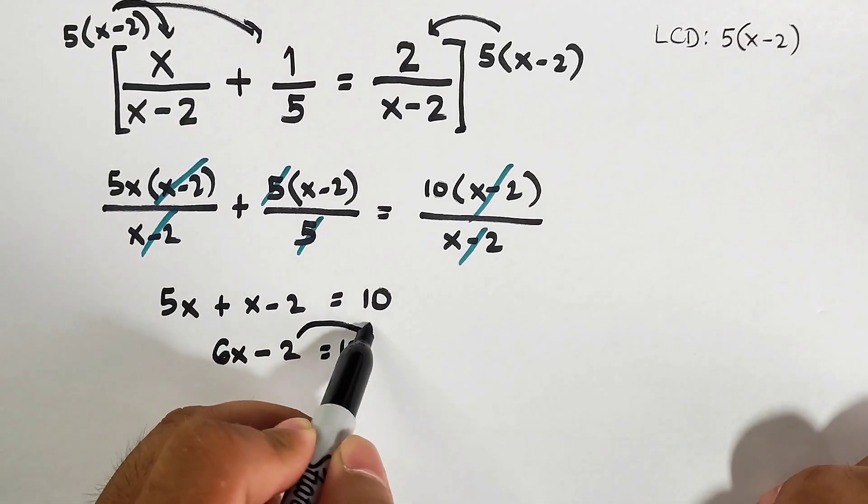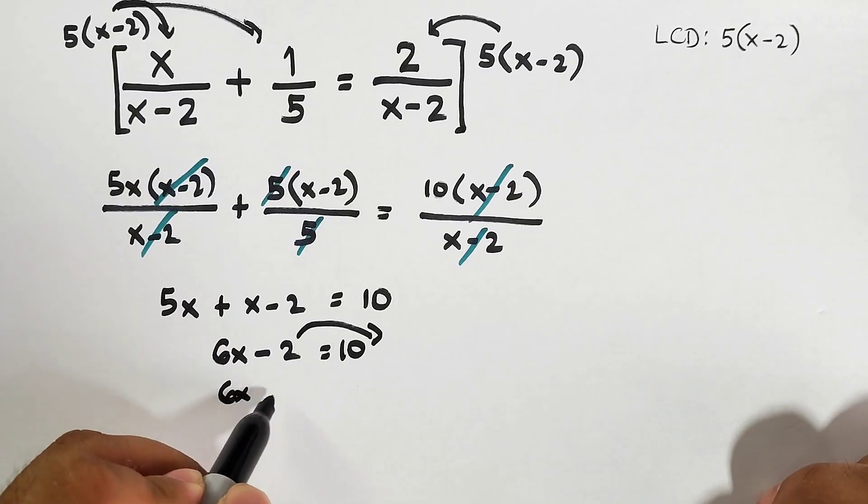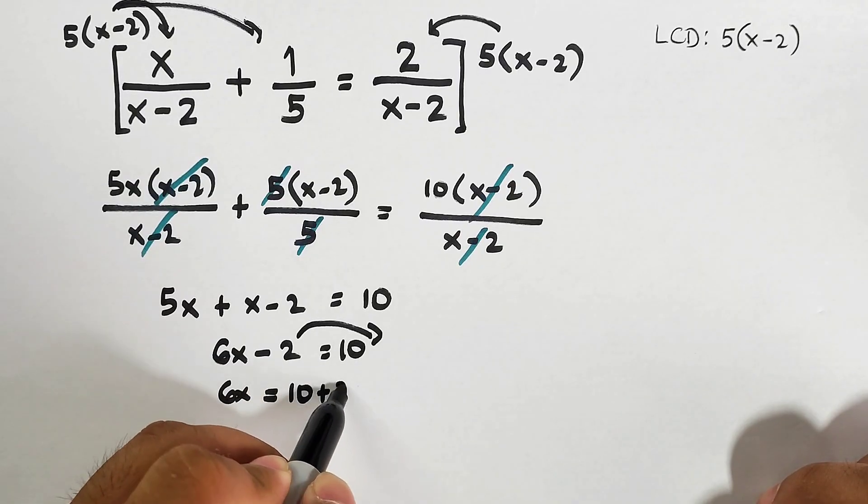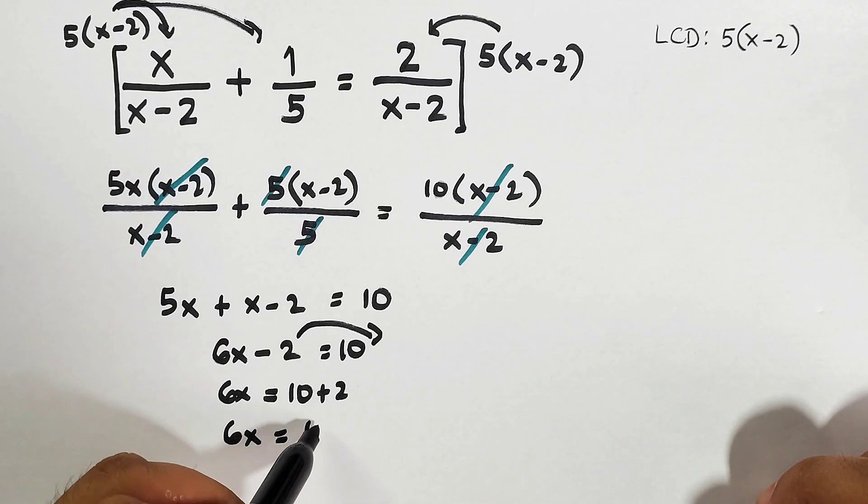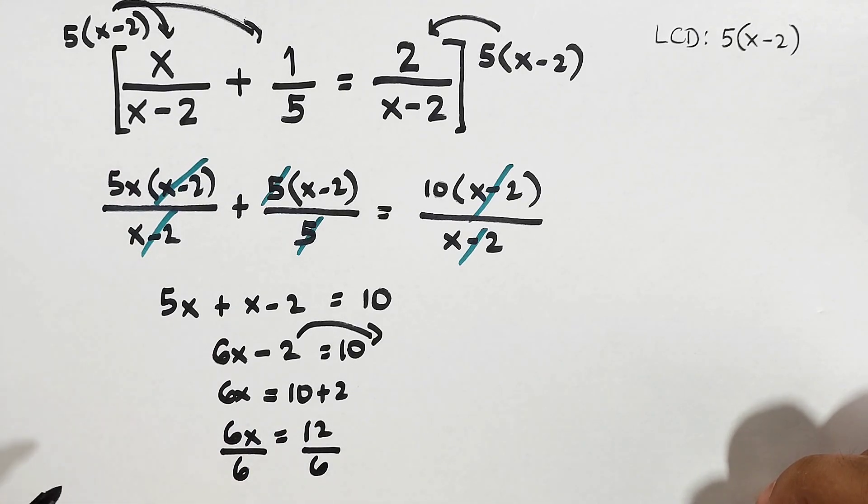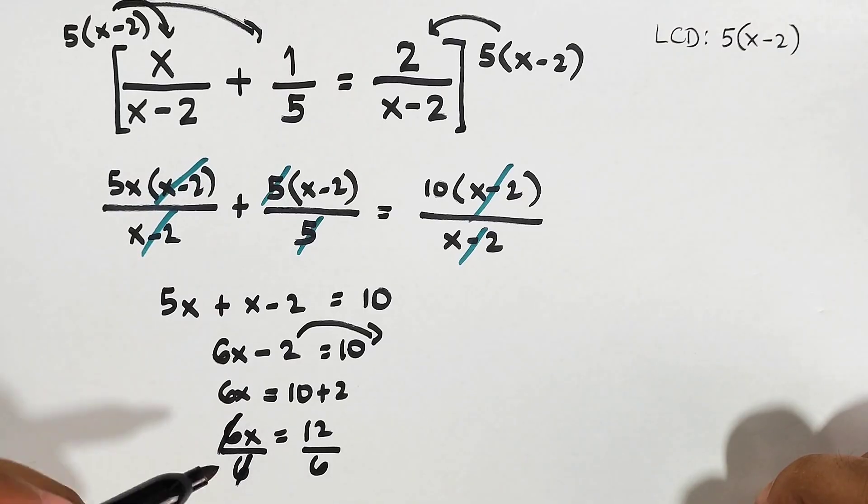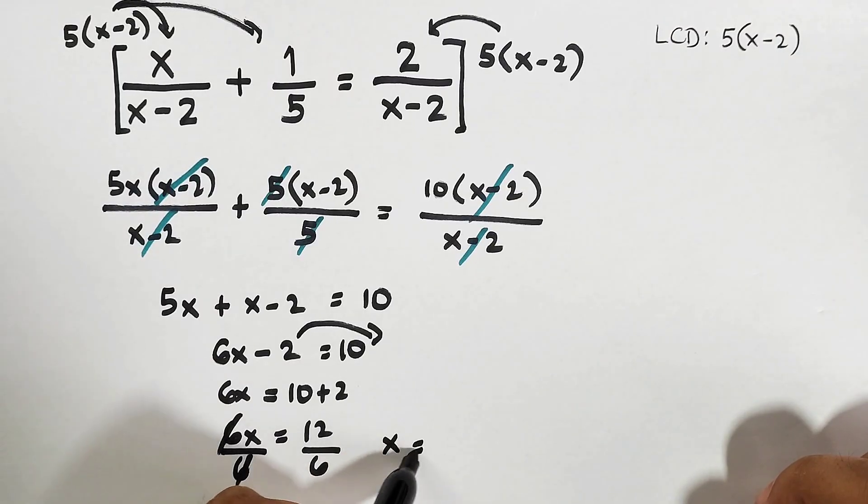Transpose negative 2 to the other side: 6x equals 10 plus 2, meaning 6x equals 12. Divide by 6, so x equals 12 divided by 6, which equals 2.